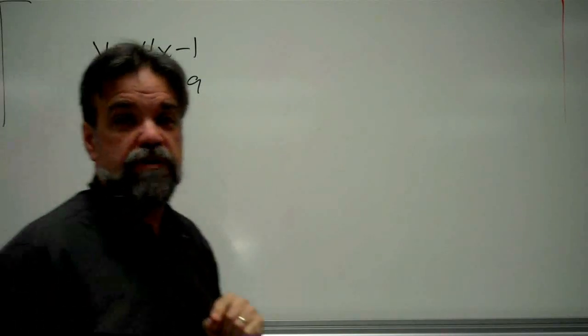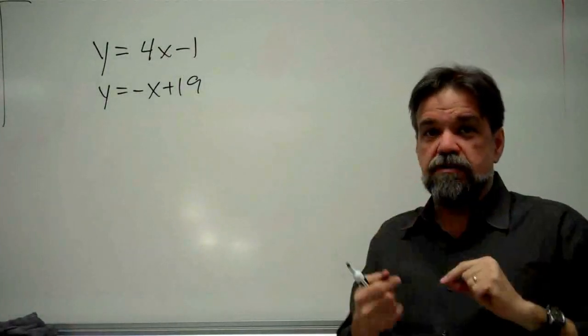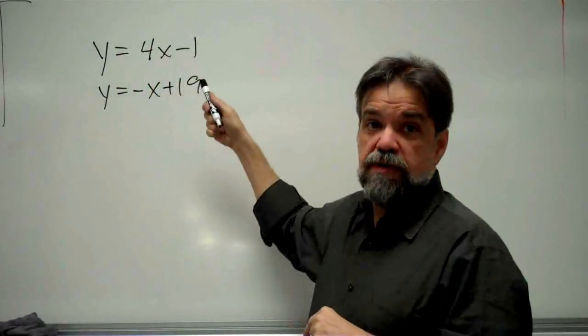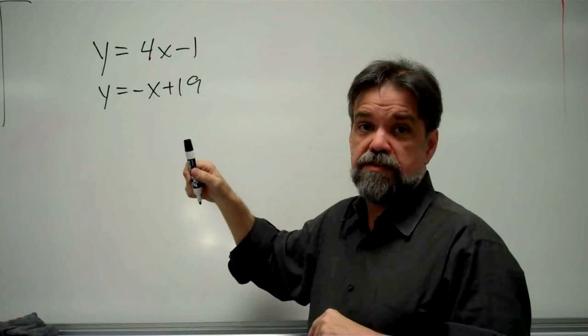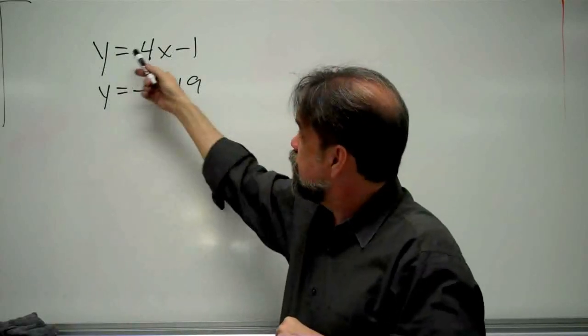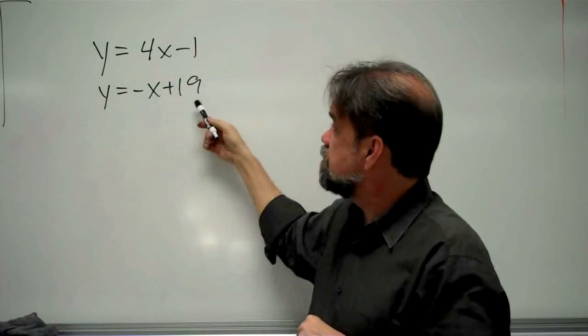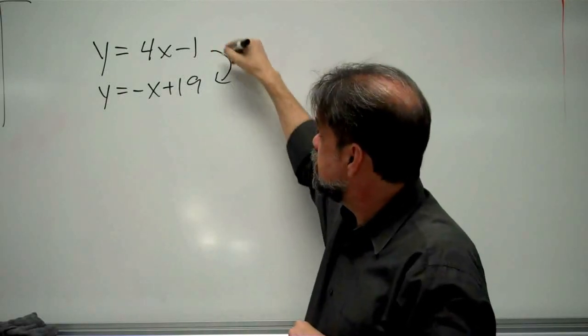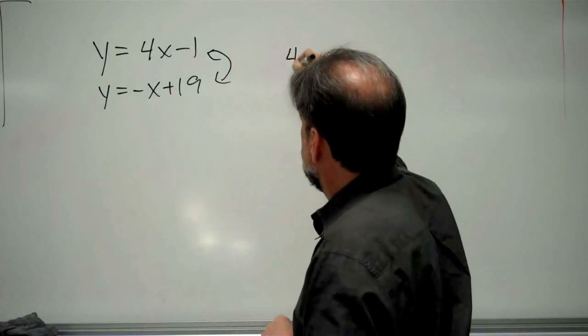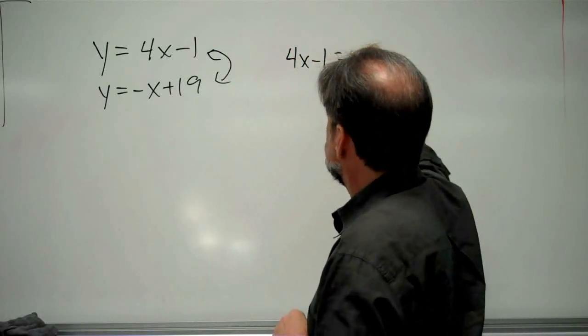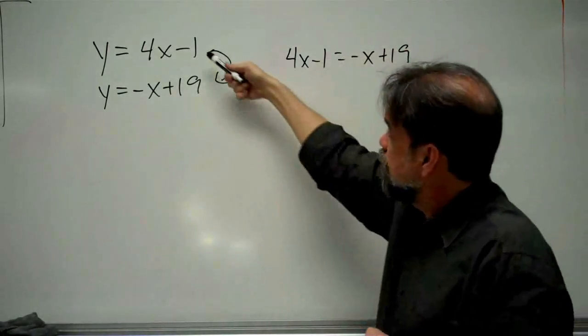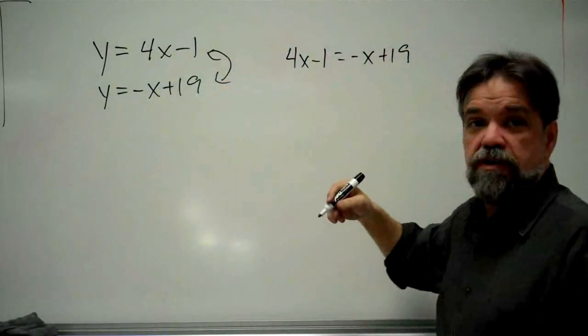Now there's one point, the point where these two lines cross each other, where the y-coordinate is both 4x minus 1 and negative x plus 19. So for that one point, if the y-coordinate equals this and the y-coordinate also equals this, then these two things have to equal each other. So what we do is we set up 4x minus 1 equals negative x plus 19. Have one equation equal the other equation and just solve that.